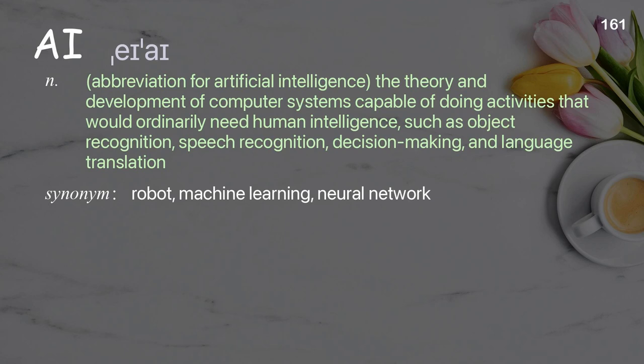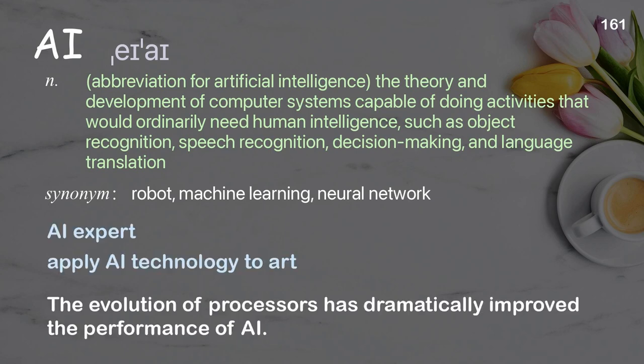AI: abbreviation for artificial intelligence; the theory and development of computer systems capable of doing activities that would ordinarily need human intelligence, such as object recognition, speech recognition, decision making, and language translation. Examples: AI expert; apply AI technology to art. The evolution of processors has dramatically improved the performance of AI.